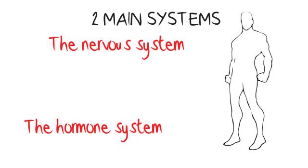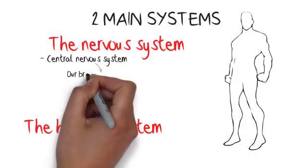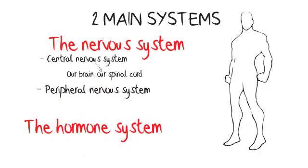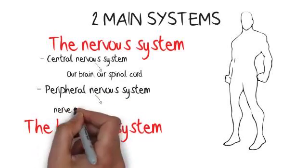The nervous system works in three parts. We have our central nervous system that consists of our brain and our spinal cord, and we have our peripheral nervous system that is made up of the nerves in the rest of the body.